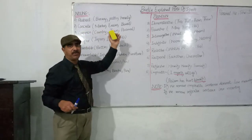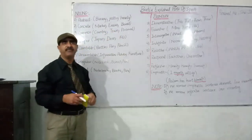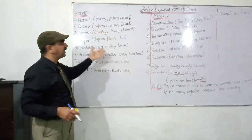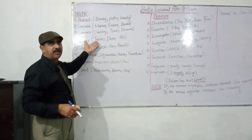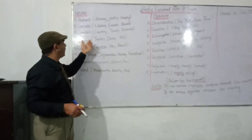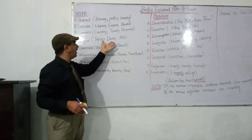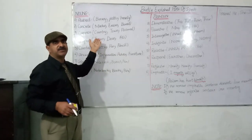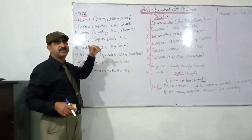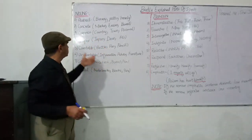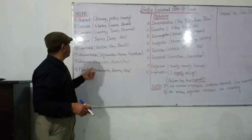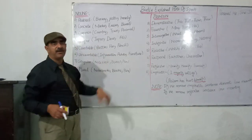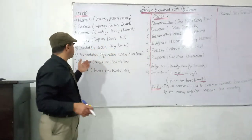Common nouns are the names of common things, places, or persons — like country, town, and animal. Proper nouns are the names of specific places, persons, or things — like Japan, deer, Ali. Countable nouns are those that can be counted — bottle, pen, pencil.